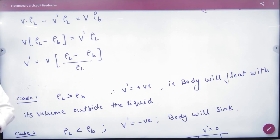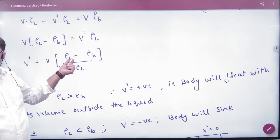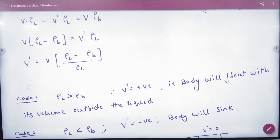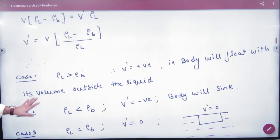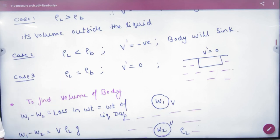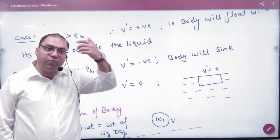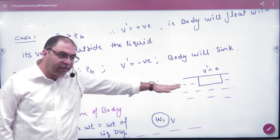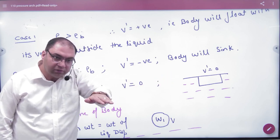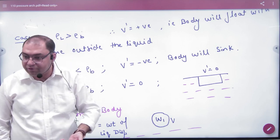Why will it sink? If the density of the body is greater, so if this density is greater then V' will be negative. Negative means it will sink. So if both densities are equal, V' will be equal to zero. That means neither it will float nor it will sink in the water. It will stay at the top surface. Because if it goes down then V' will be negative, V' positive means it will float in the water.